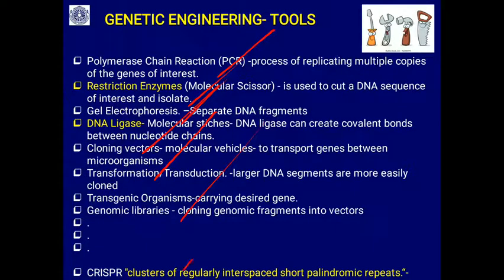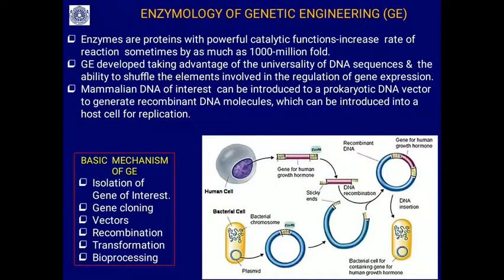All these are the tools of genetic engineering that we use to run genetic engineering operations. Today I am going to discuss only about restriction enzymes, which are called molecular scissors. These are the different types of tools we require, so restriction enzymes are called molecular scissors.